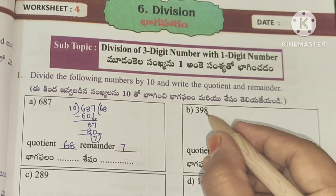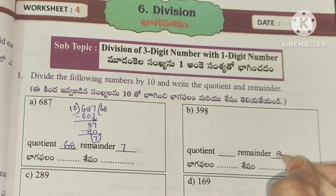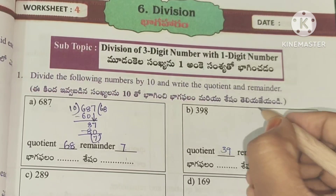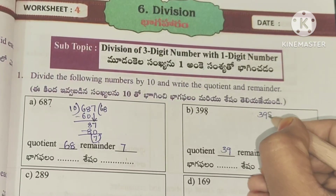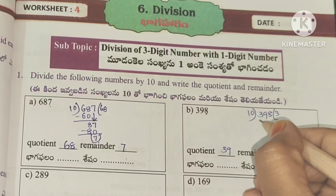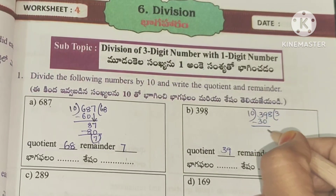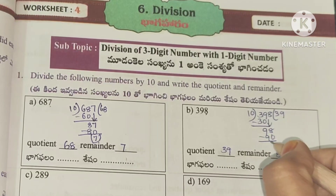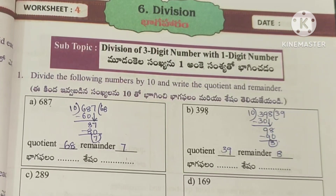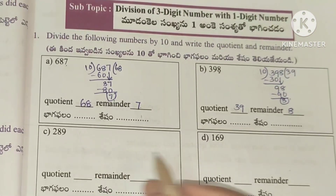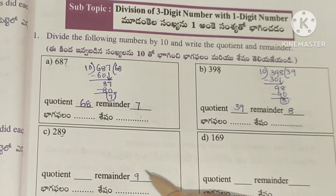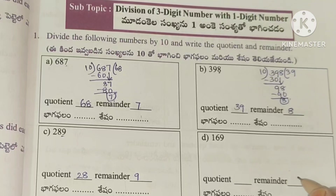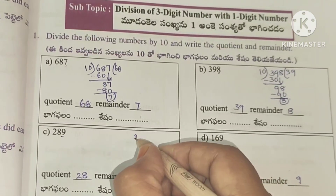The last number is the remainder, and the quotient is 39. We will try to make every division. 98 divided by 10: 9 tens are 90, so 8 will be the remainder. Next, 289 divided by 10: the last number is 9, first digits give quotient 28, remainder is 9. Division is done.